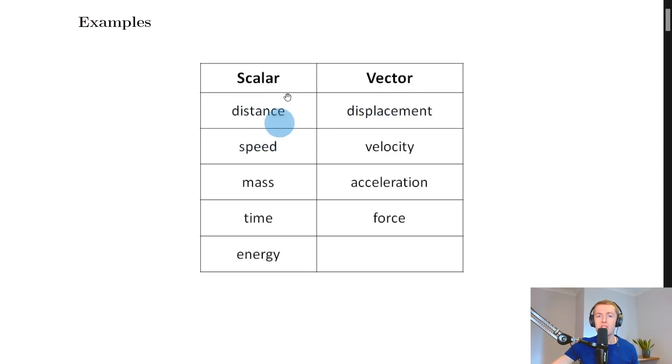We then have speed, which is a scalar. So we don't require a direction when we're talking about speeds. But if you're talking about velocities, then you do require a direction, because we can see that velocity is the vector equivalent of speed. So that means velocity is a speed with a direction.